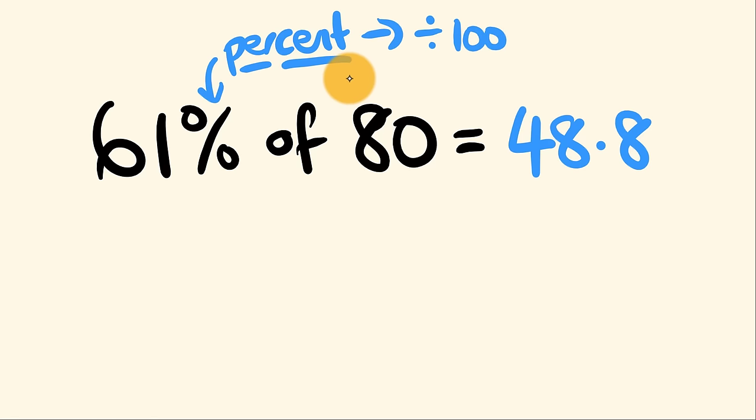So percent quite literally means dividing by 100. And what we'd usually do if we're working out percentage the old-fashioned way, we'd go 61, divide it by 100, multiply it by 80, and we'd get our answer. But here's the trick. You can divide by 100 at any stage you like to make this question work for you, and then do the multiplication.